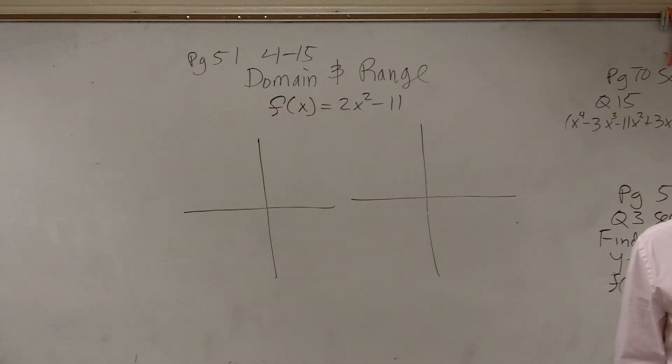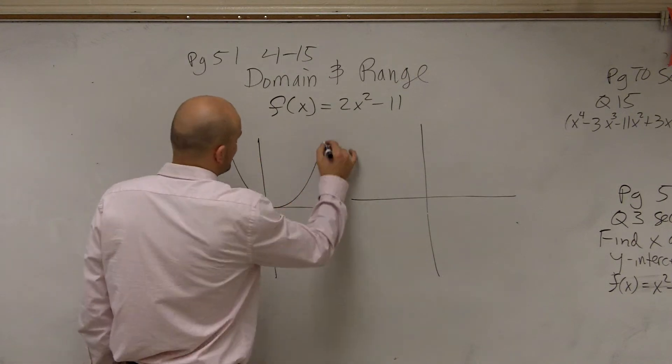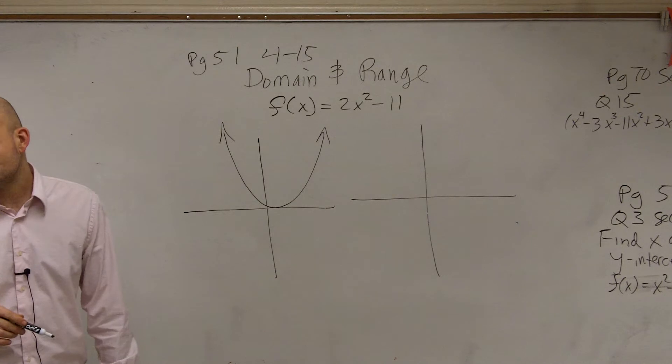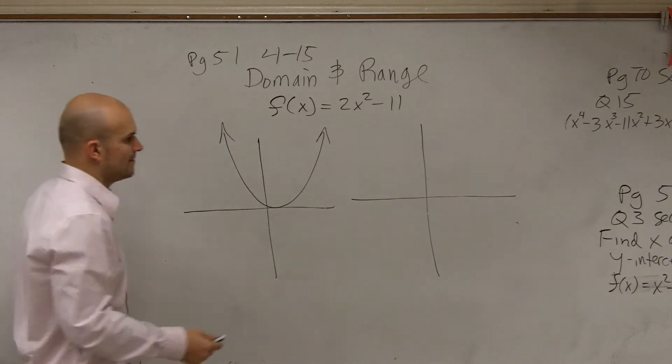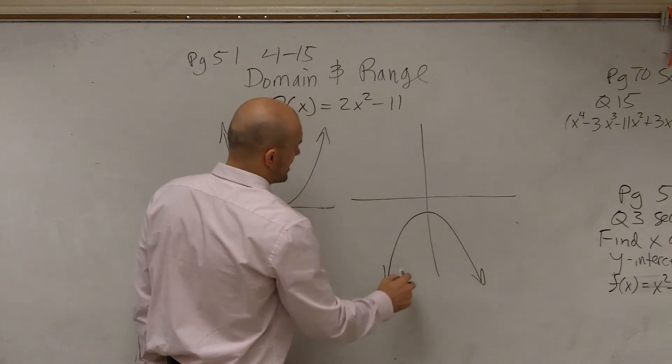What I want to do is talk to you about when dealing with the domain and range, what exactly the domain and range looks like and how we're going to be able to figure it out. So first of all, let's graph a parabola that's going to have a minimum value and open up. Then let's graph a parabola that's going to have a maximum value and open down.